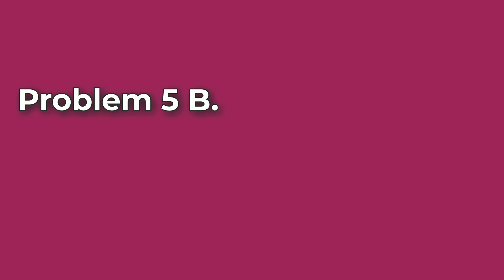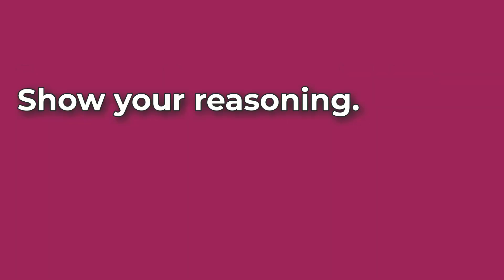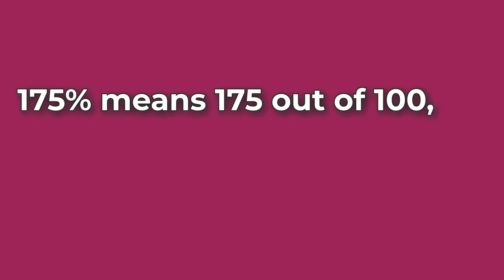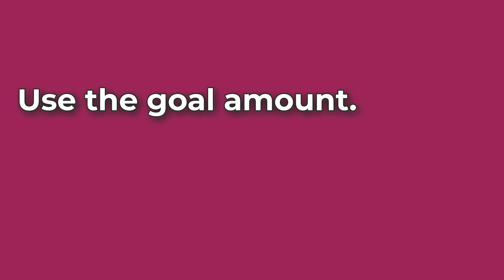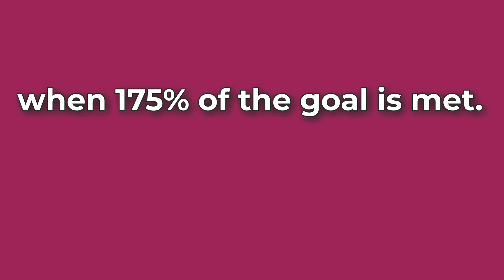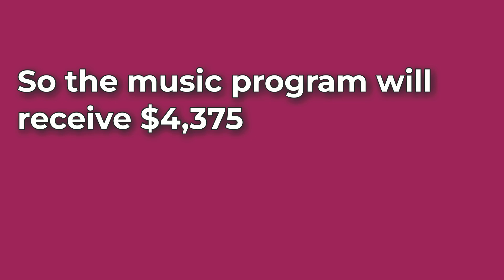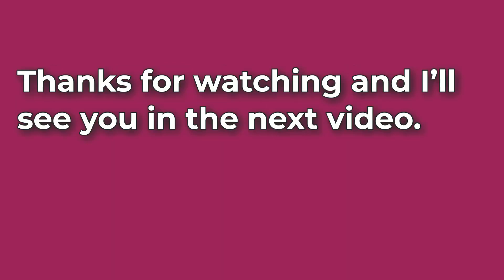Problem Number 5B. If it raises 175% of its goal, how much money will the music program receive? 175% means 175 out of 100, which is the same as 1.75 times the original amount. The goal is $2,500. Multiply $2,500 by 1.75 to find how much money is raised when 175% of the goal is met. The music program will receive $4,375 when 175% of its goal is raised. I hope this helped. Thanks for watching, and I'll see you in the next video.